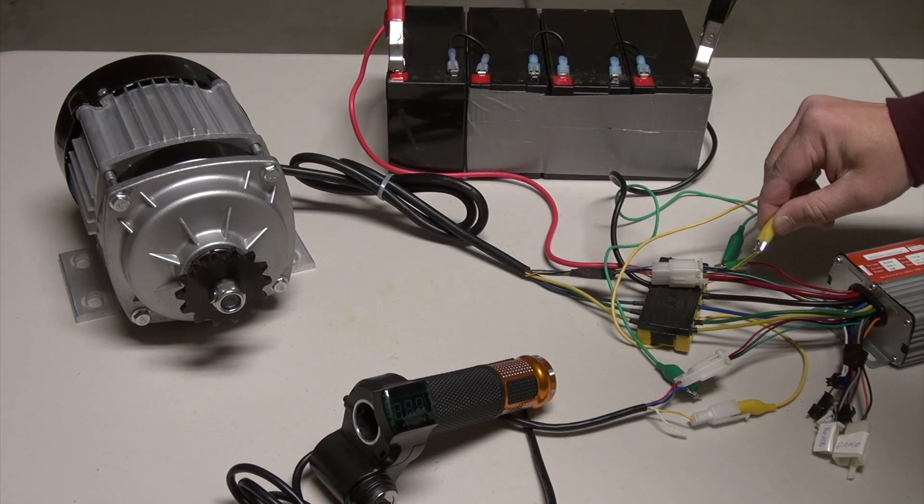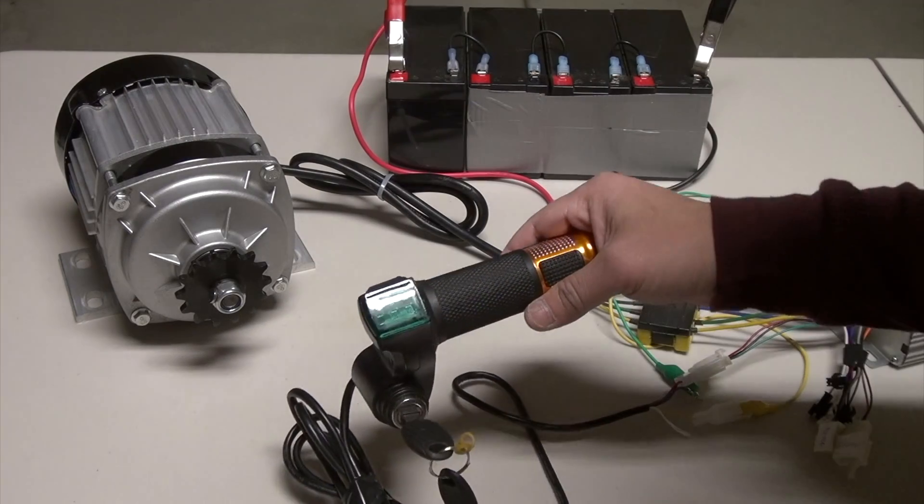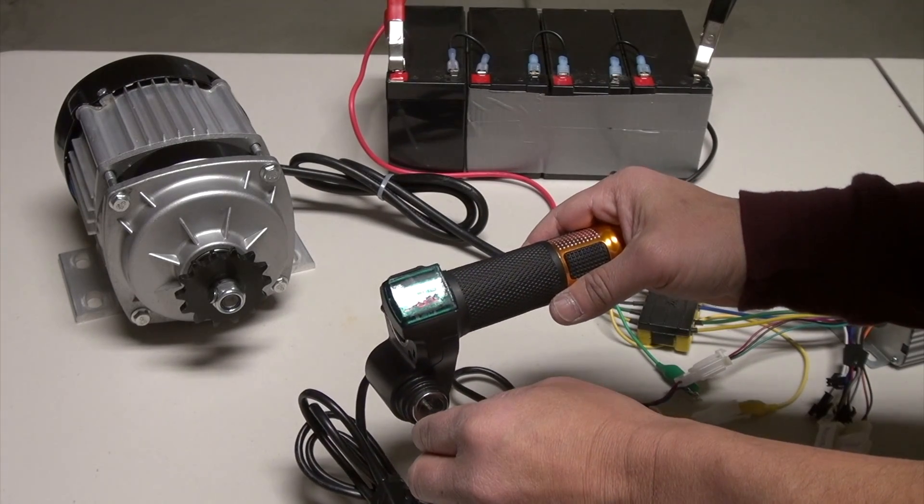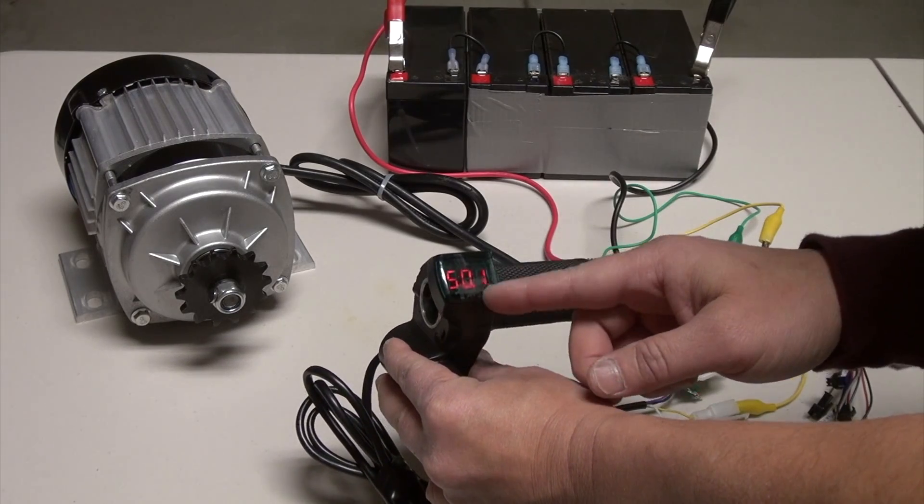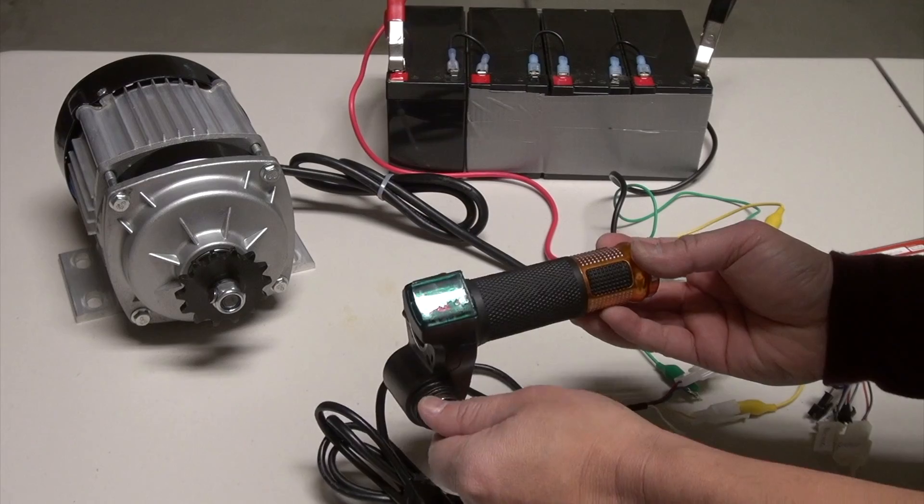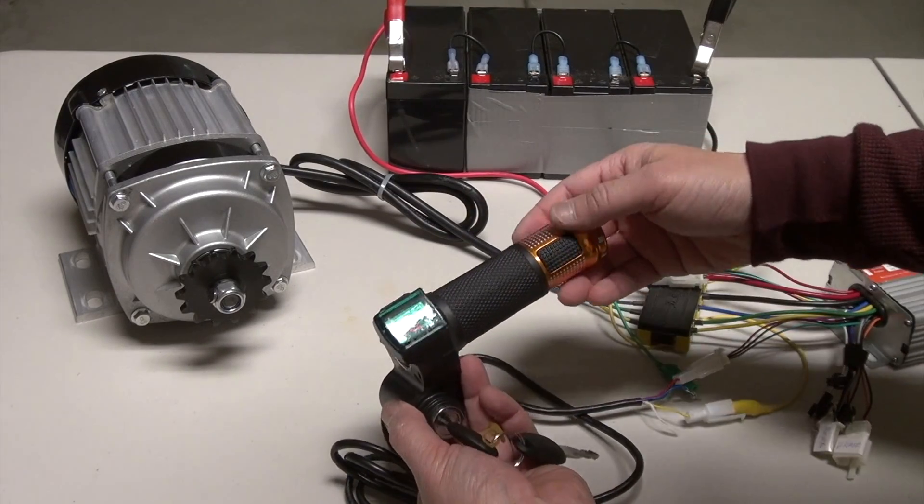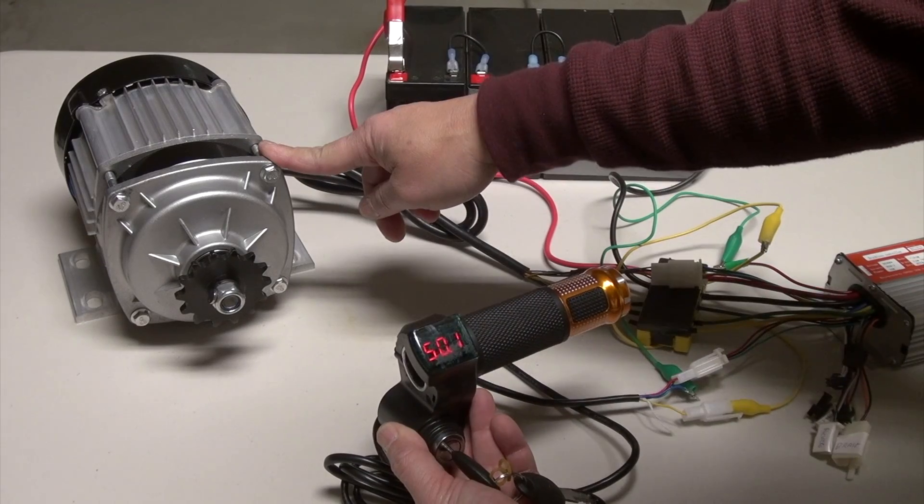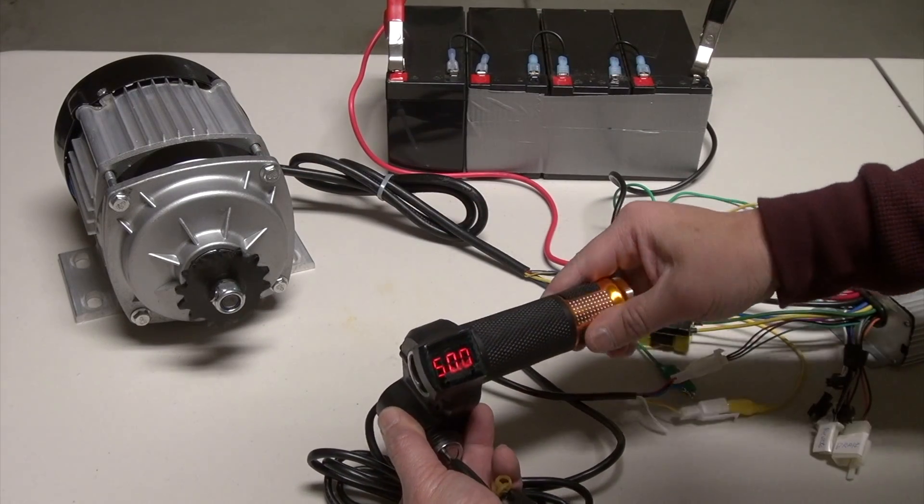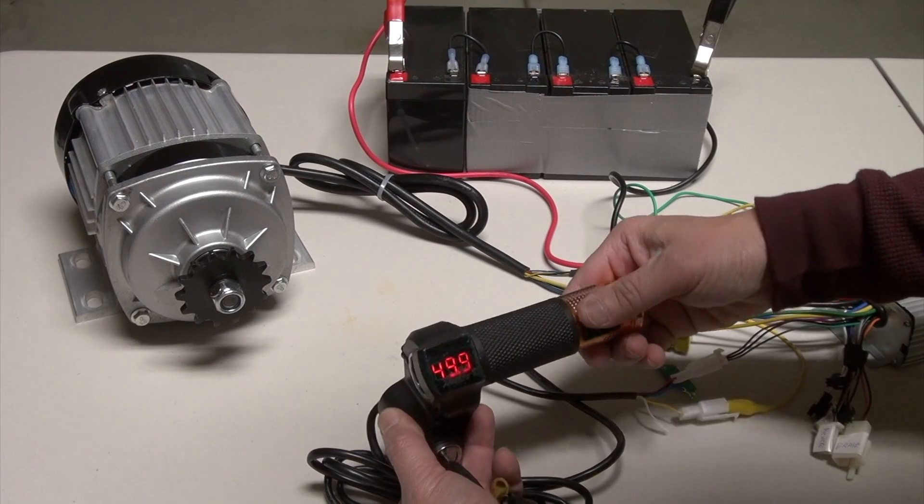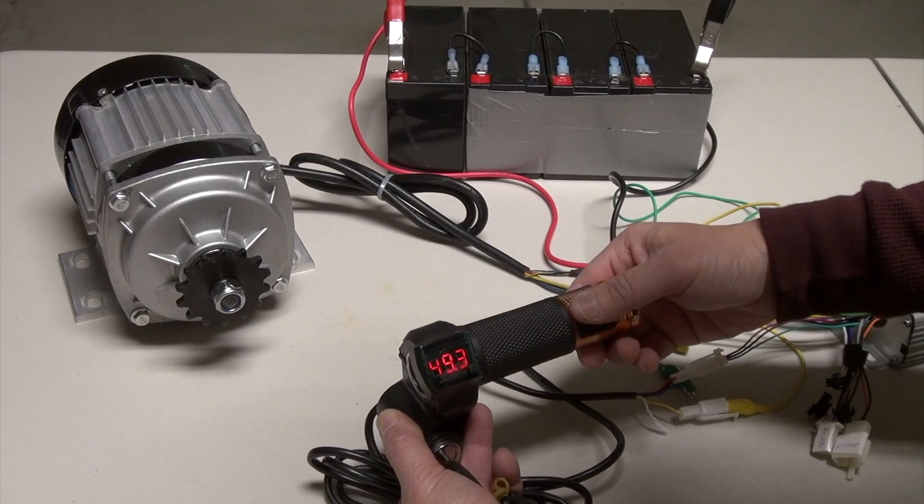Now I'm turning on the switch. It has 50 volts, for some reason this one measured 50. So now it's on. Let's see if I turn on the throttle if this thing is going to run. Here we go. Whoa! It works!